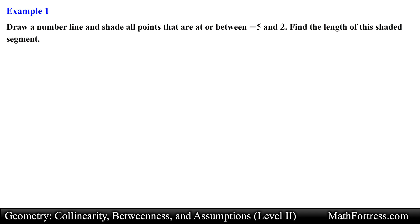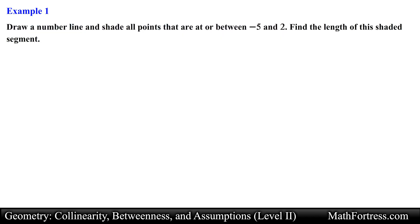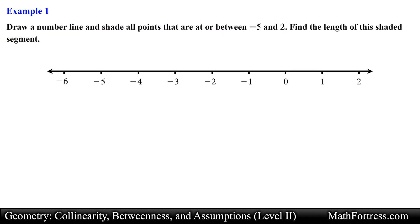Draw a number line and shade all points that are at or between negative 5 and positive 2. Find the length of this shaded segment. In this problem we are asked to draw a number line and shade the region between negative 5 and positive 2. Let's go ahead and draw this number line. The region between negative 5 and positive 2 corresponds to all numbers greater than negative 5 but less than positive 2.